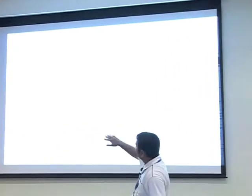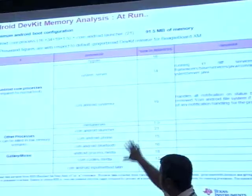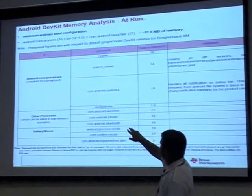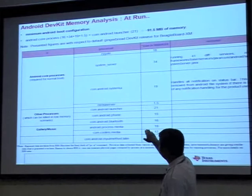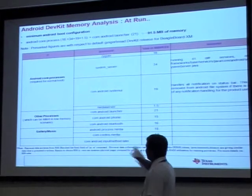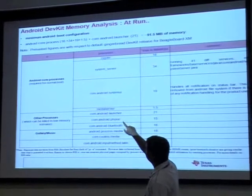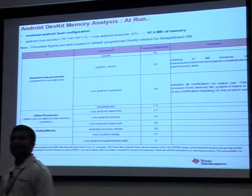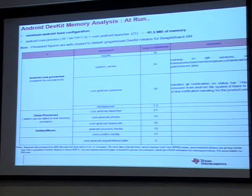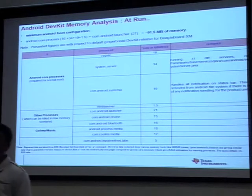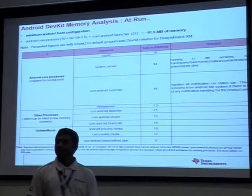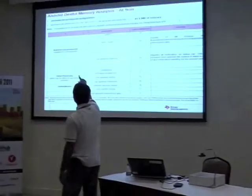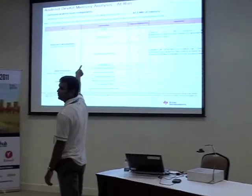In terms of particular processes: zygote requires 16 MB, system server 34 MB, system UI is 19 MB, media server, phone, Bluetooth, media. If I club zygote, system server, and system UI, I require 91.5 MB minimum memory to see the home screen after Android boots. Bluetooth is not counted in the 91.5 MB — it will only include zygote, system server, system UI, and launcher.